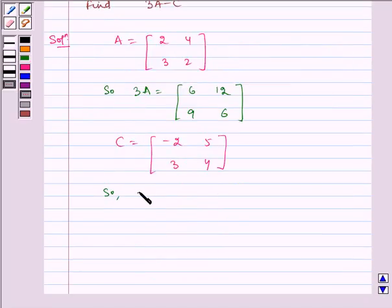So minus C equals 2, minus 5, minus 3, minus 4.